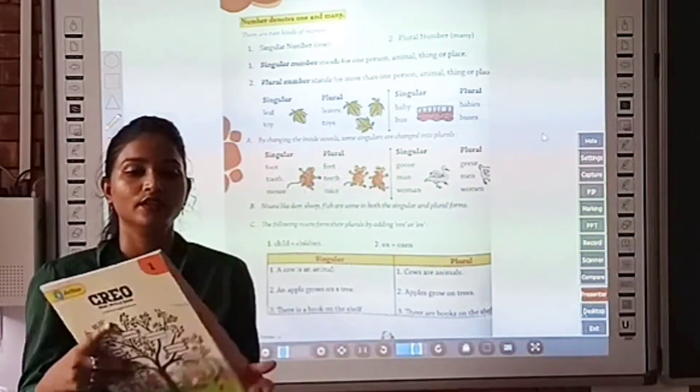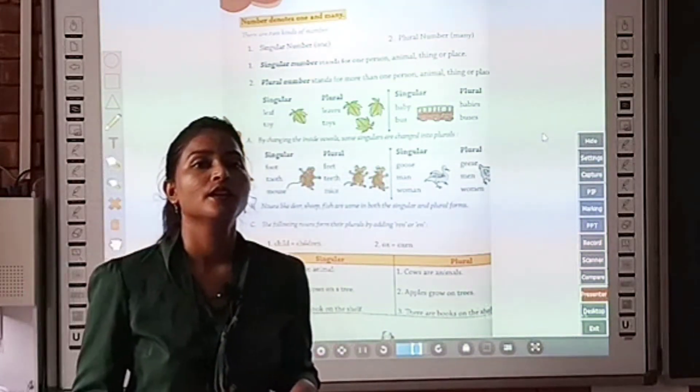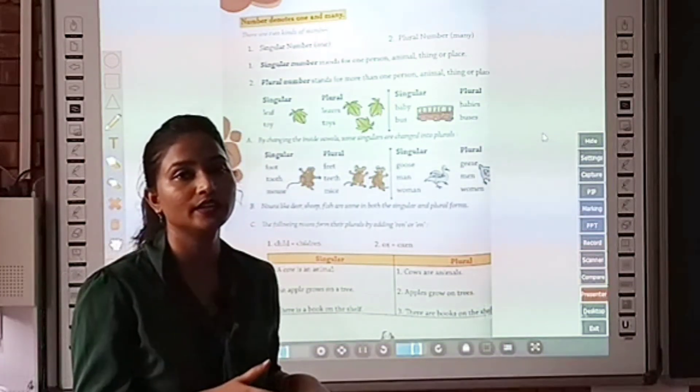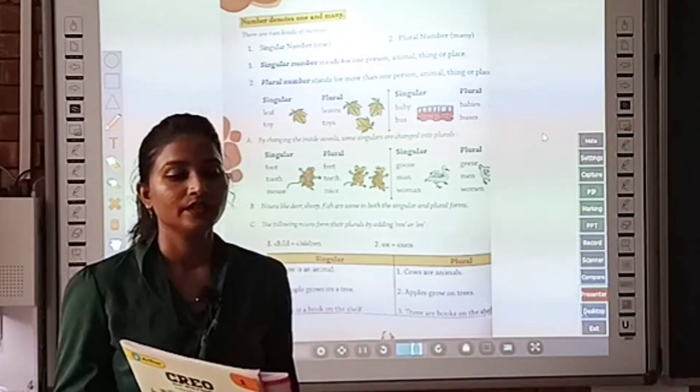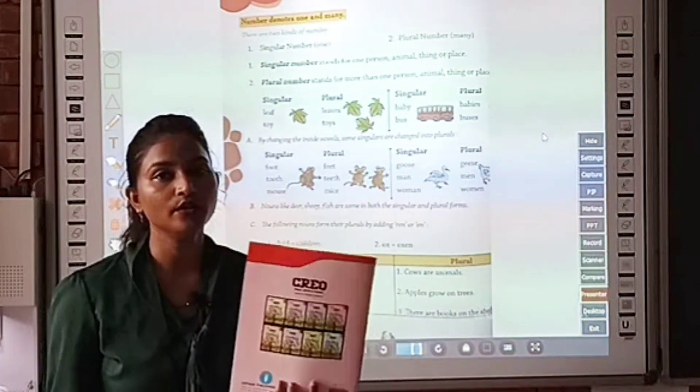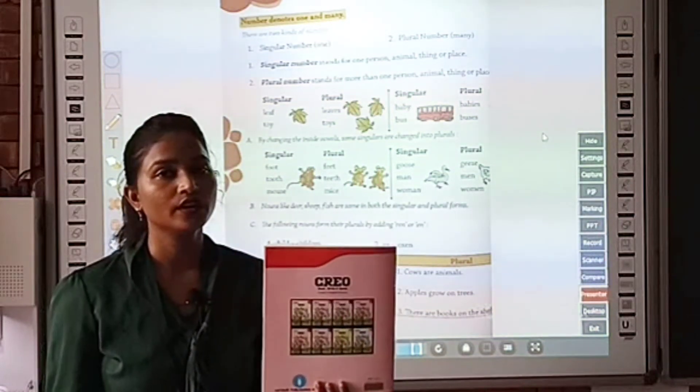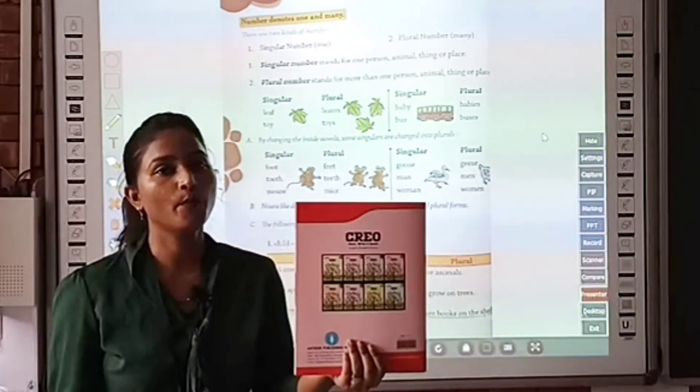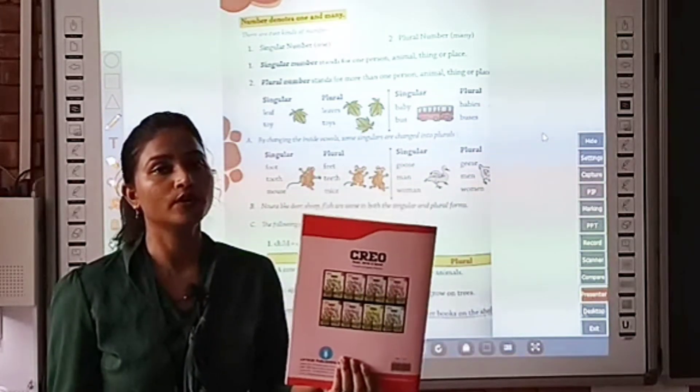So to change singular noun into plural noun we have to add S to it. So I have changed this singular noun that is book into plural noun by adding S to book. So it has become books.